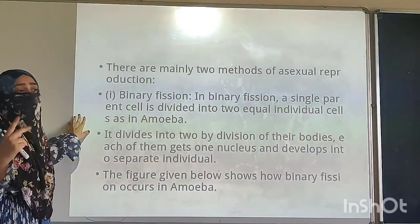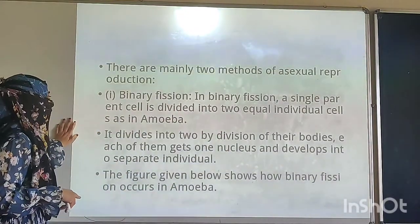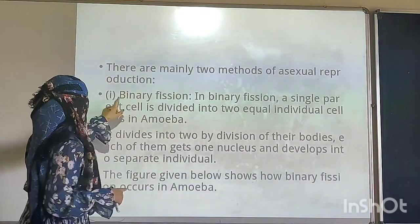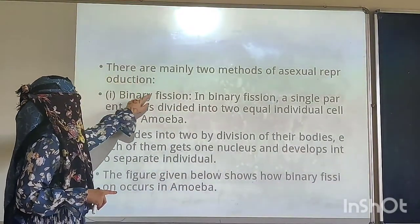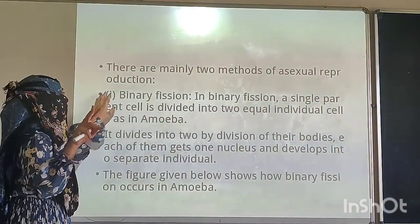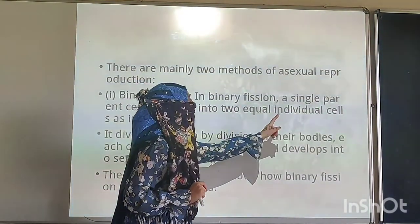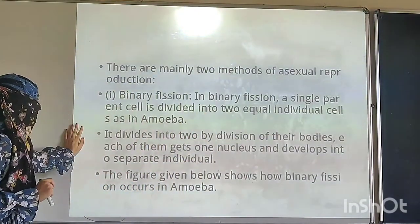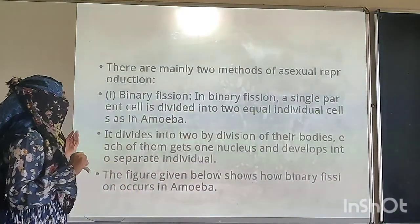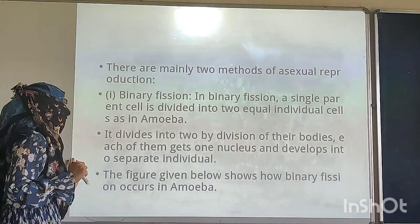Binary fission is a type of asexual reproduction where one parent is involved. The single parent cell is divided into two equal individual cells. You can remember that binary means two. We will take the example of Amoeba to explain this.